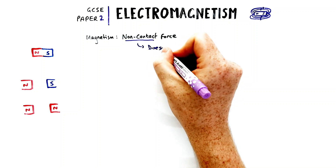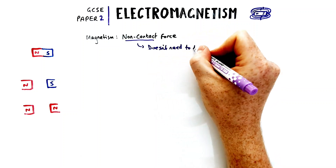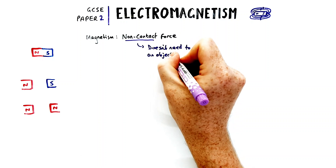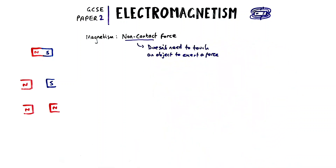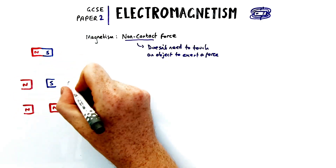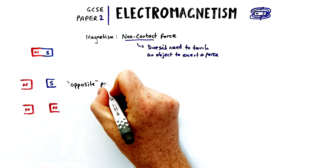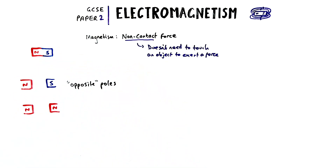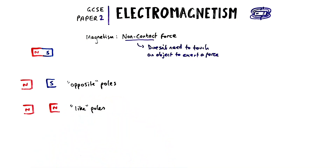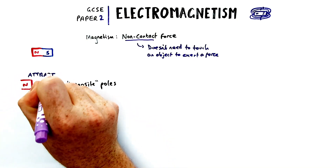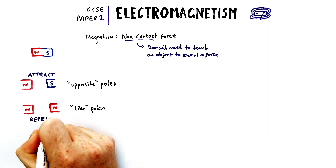So first of all, what is magnetism? It's an example of a non-contact force. That means that two magnets or magnetic material do not need to be in contact or touching each other for a force to be exerted. There are two situations and two types of forces you can have with magnetism: opposite poles and like poles. Opposite poles will attract each other; like poles will repel.